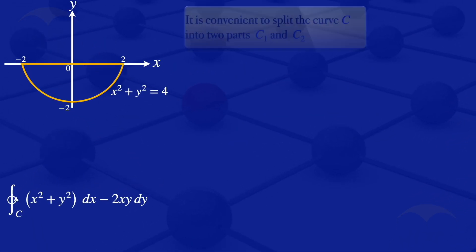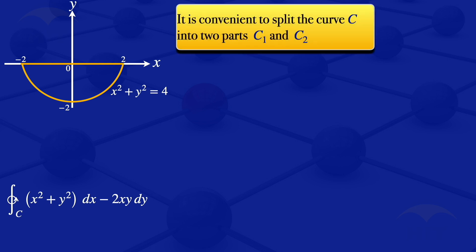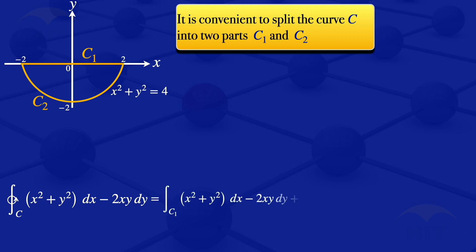It is convenient to split that curve into two parts C1 and C2. C1 is the horizontal part, and C2 is the arc defined by x squared plus y squared equals 4. When we split the curve into two parts, the line integral along the closed curve C becomes the integral along C1 plus the integral along C2 of x squared plus y squared dx minus 2xy dy.